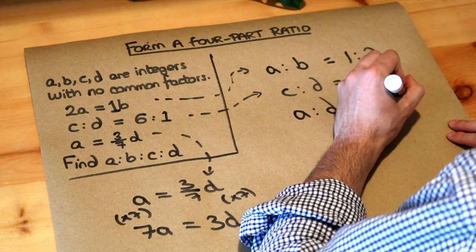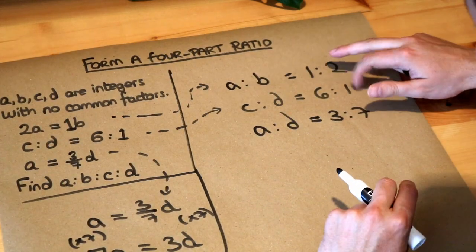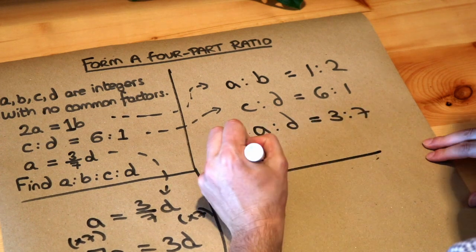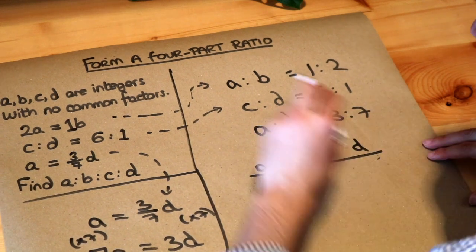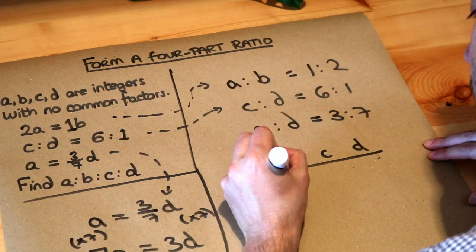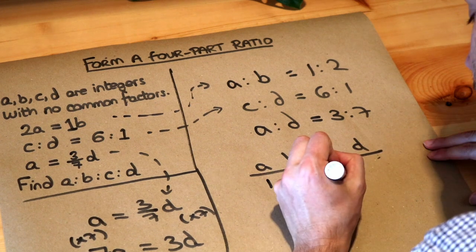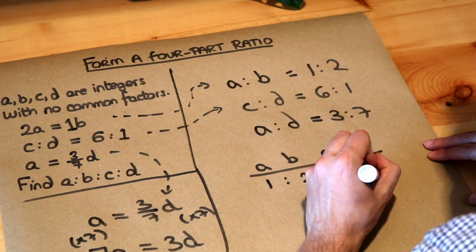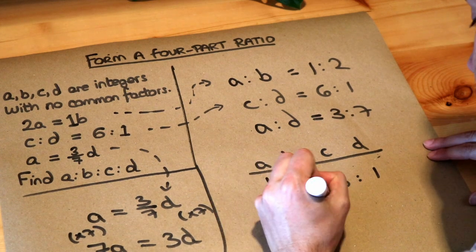So we've got those ratios, and now we can do the usual method for combining these three ratios together. So I'm just going to do a little table, A, B, C, D. The ratio of A to B is 1 to 2. The ratio of C to D is 6 to 1. And the ratio of A to D is 3 to 7.